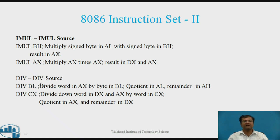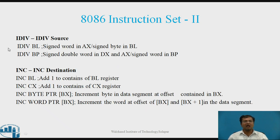Fourth, Division. Syntax: DIV Source. Example: DIV BL — divides a word in AX by byte in BL; quotient in AL, remainder in AH. DIV CX — divides a doubleword in DX:AX by word in CX; quotient in AX, remainder in DX. IDIV Source — example: IDIV BL — signed word in AX divided by signed byte in BL.